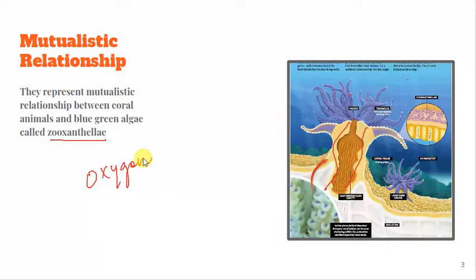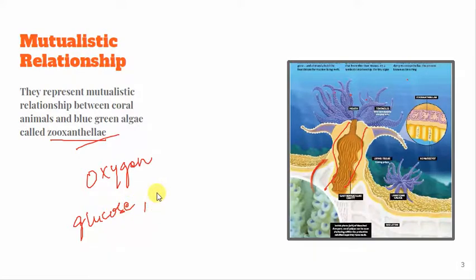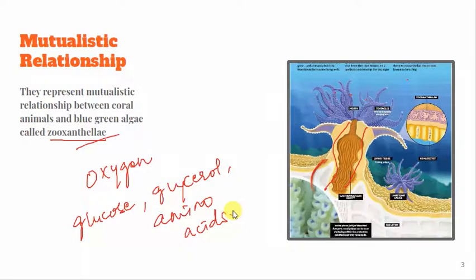Most importantly, as mentioned, the zooxanthellae supply the coral with glucose, glycerol, and amino acids, which are the products of photosynthesis and which the coral requires to survive. That's why these corals live in very large colonies — their bodies are attracted to one another, which is why they form such big colonies, and that's how photosynthesis and oxygen are generated on the ocean floors.